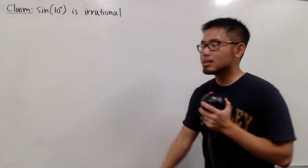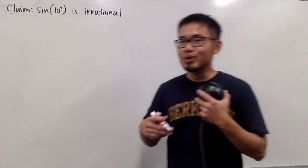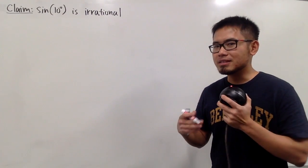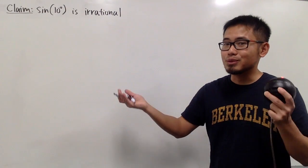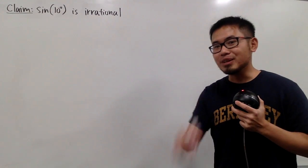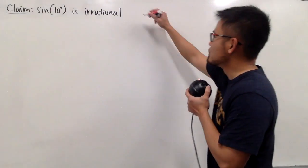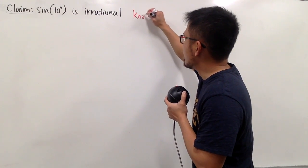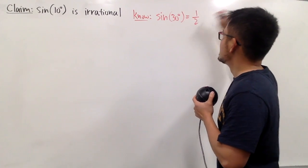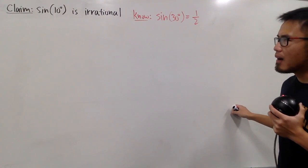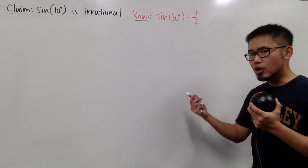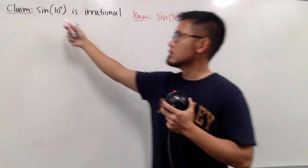Here is what I noticed. Sin of 10 degrees — we don't know this too well. Let's think about an easier sine value that we can work with. How about sin of 30 degrees, because that's a special angle? Sin of 30 degrees, this we know — it's just 1 over 2. And now, can we build up any connection between the 10 degrees and also the 30 degrees? Sure, because 30 is just 3 times 10 degrees.